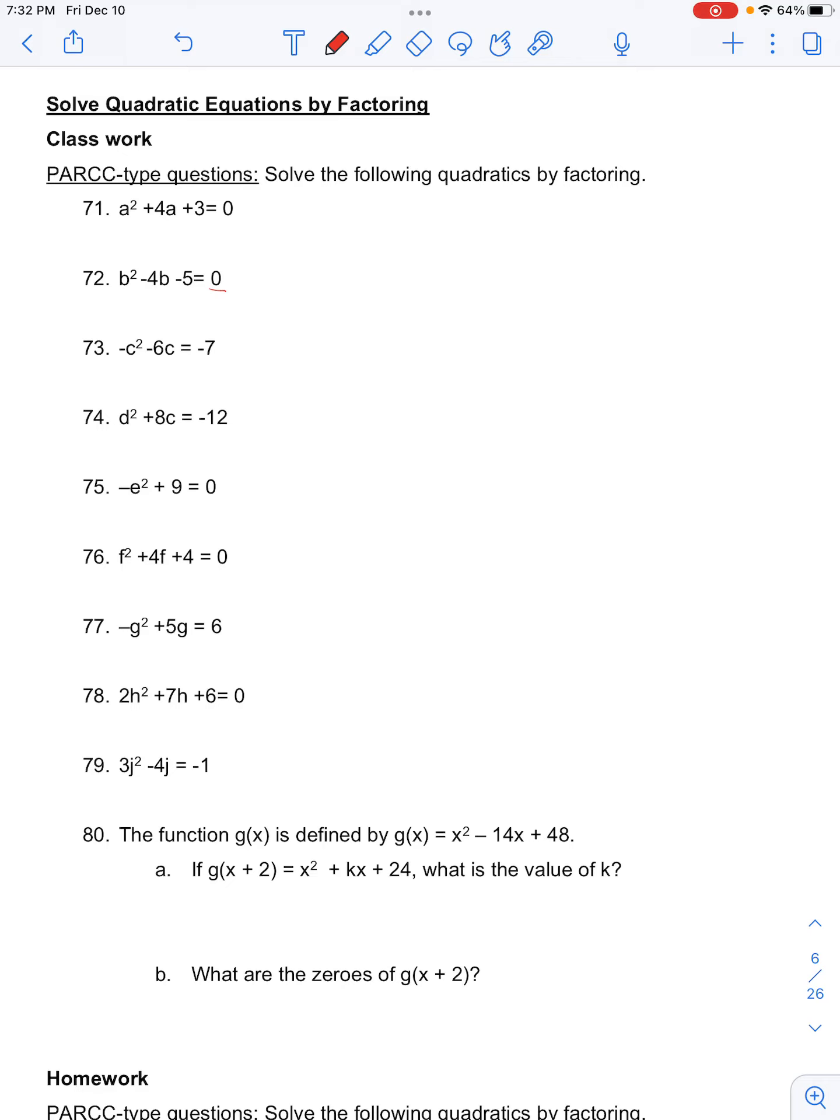So when we factor b squared minus 4b minus 5, we want something that multiplies to negative 5. So we have factors of negative 5, like negative 1, 5, or negative 5 and 1, and adds to negative 4. So this is our winning scenario here.